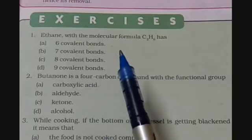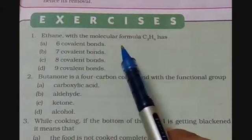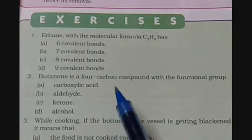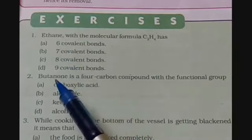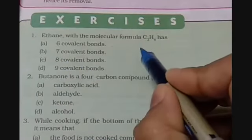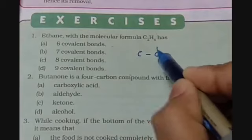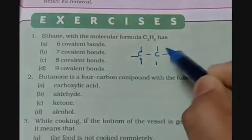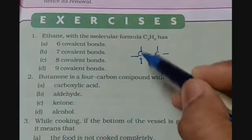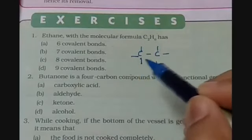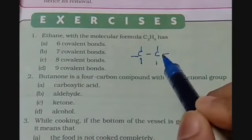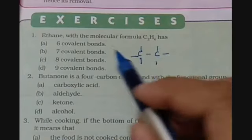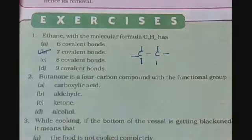Exercise question 1: ethane with molecular formula C2H6 has how many covalent bonds? Options are 6, 7, 8 and 9. Drawing the structure: 2 carbon atoms with single bonds and 6 hydrogen atoms. Counting the bonds: 1, 2, 3, 4, 5, 6 C-H bonds and 1 C-C bond — total 7 covalent bonds. So option B is correct.